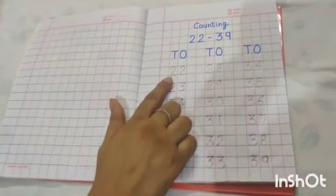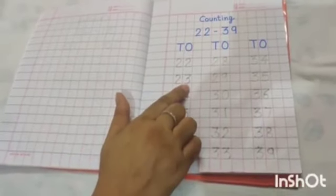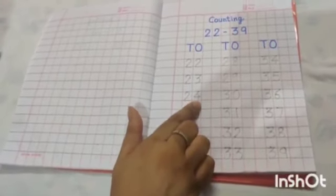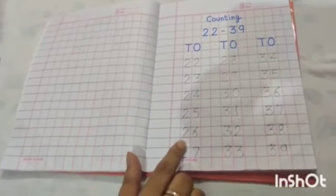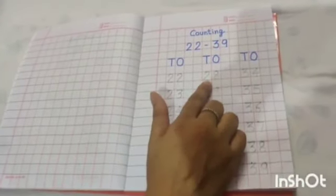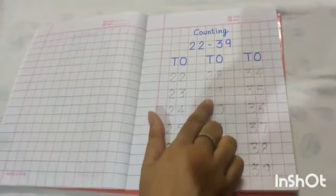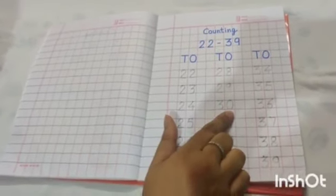Let's revise again. 22. 23. 24. 25. 26. 27. 28. 29. 30.